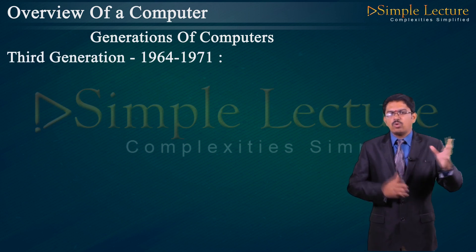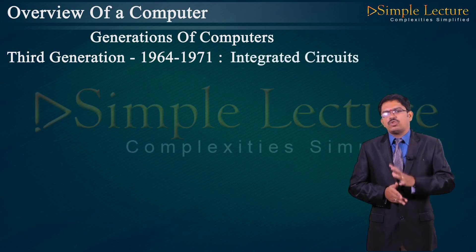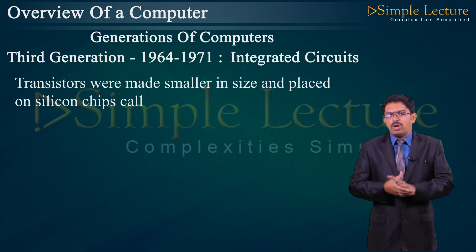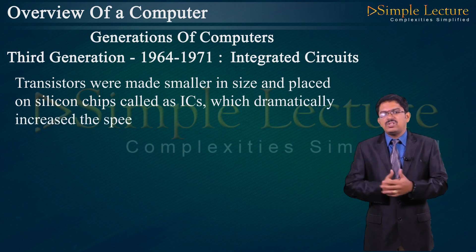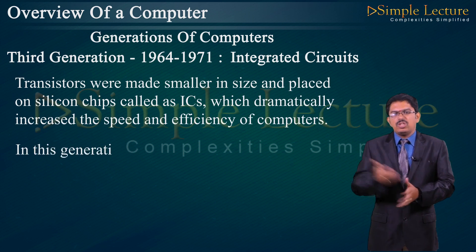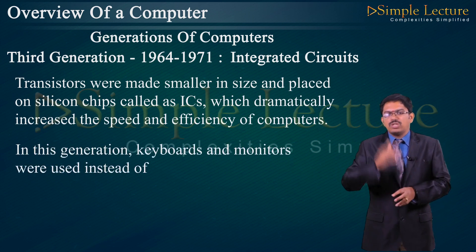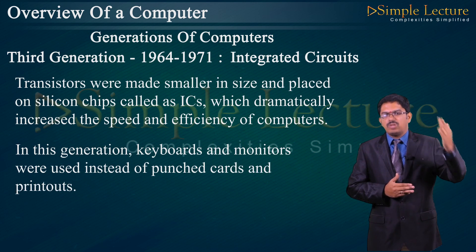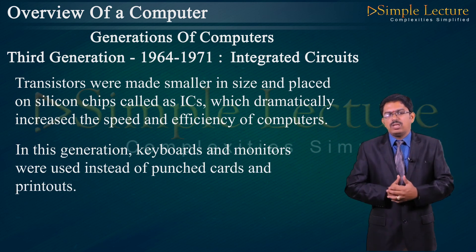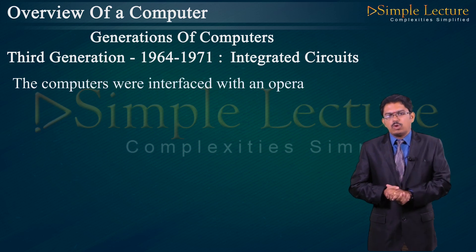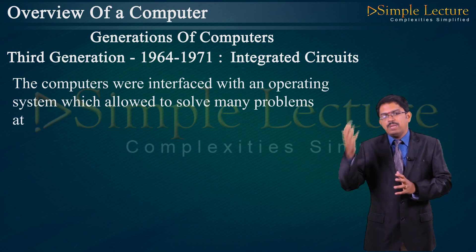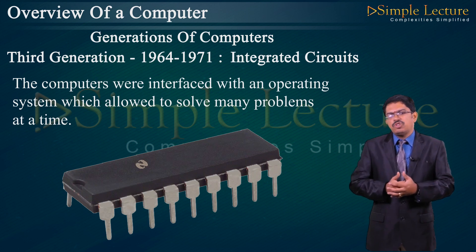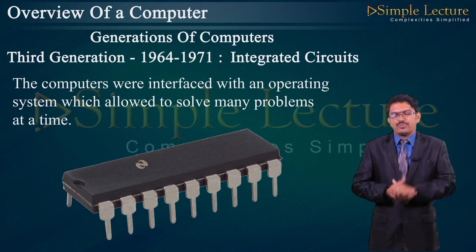Third Generation (1964–1971): integrated circuits (ICs) were developed. Transistors were miniaturized and placed on silicon chips called ICs, which dramatically increased speed and efficiency. In this generation, keyboards and monitors were used instead of punch cards and printouts. Computers were interfaced with an operating system which allowed solving many problems at a time. ICs with multiple transistors connected together can be seen in microprocessors.